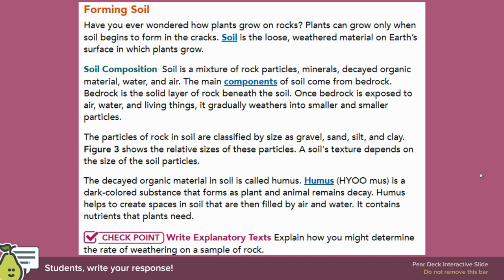The particles of rock in soil are classified by size as gravel, sand, silt, and clay. Figure 3 shows the relative sizes of these particles. A soil's texture depends on the size of the soil particles.